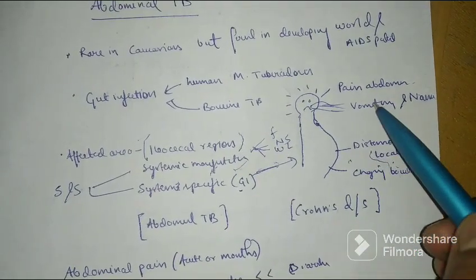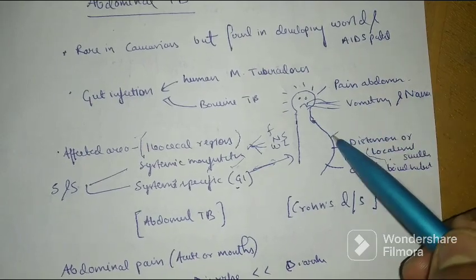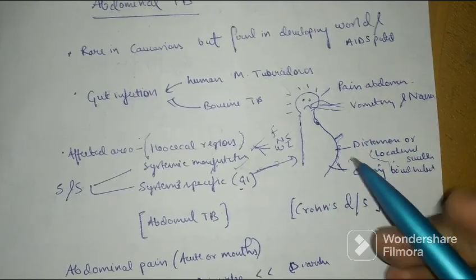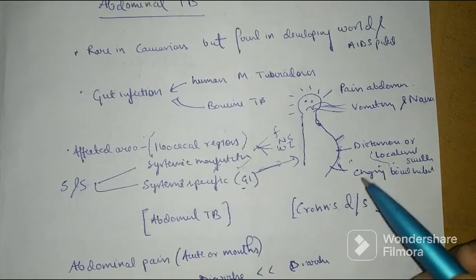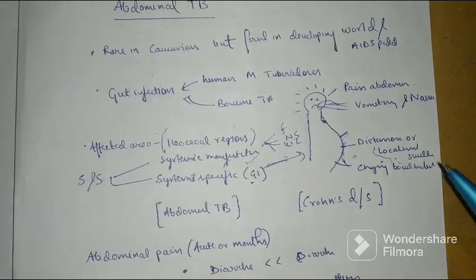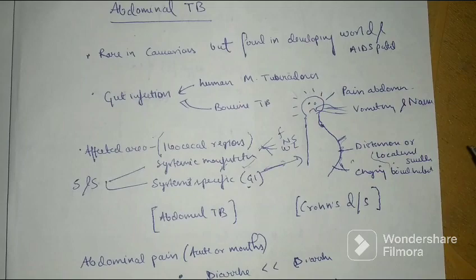Along with distension of abdomen, patient can have nausea, vomiting along with pain abdomen. There will be changing bowel habits, sometimes diarrhea, sometimes constipation, or the frequency of bowel movement changed.